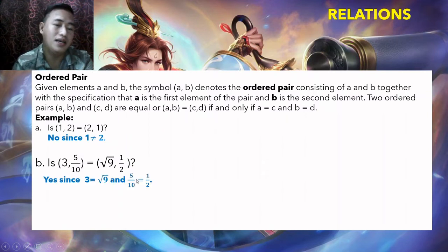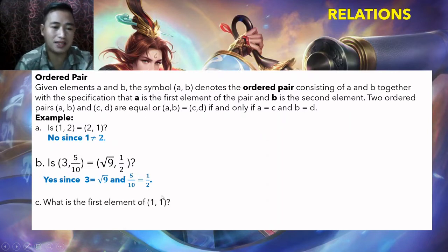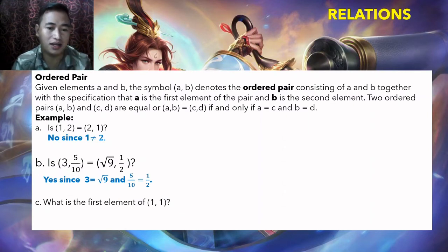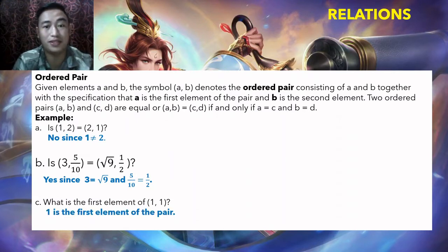Actually, the answer is yes. Since the square root of 9 is 3, and 5/10 reduces to 1/2, so they are equal. Next, what is the first element of the ordered pair (1, 1)? The first element is 1, and the second element is also 1.